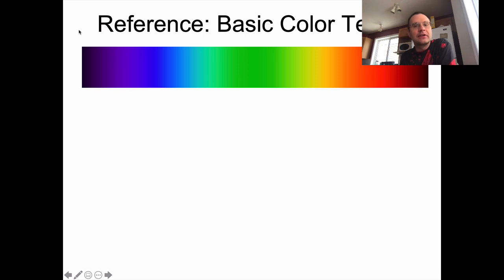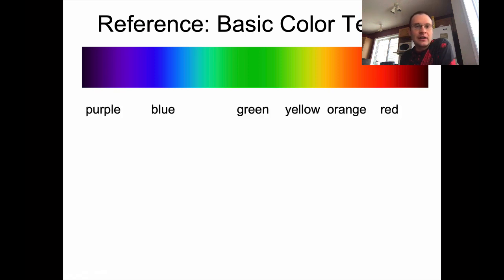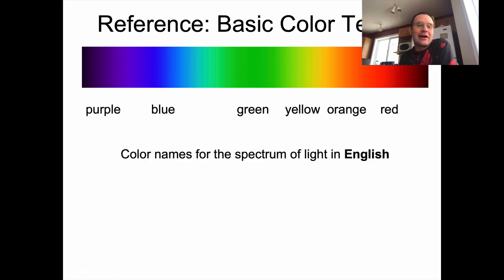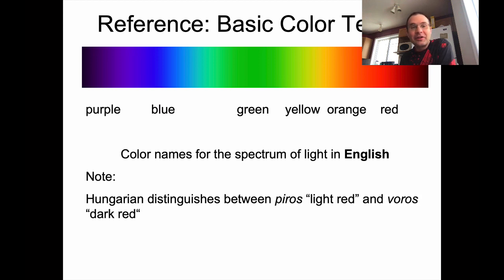There's also a linguistic way to divide up the color spectrum. In English, I would divide it: red, orange, yellow, green, blue, purple — six colors. But there are other languages that make further distinctions. Hungarian apparently distinguishes between piros and vörös — a light red and a dark red. Russian distinguishes between a dark blue, siniy, and a light blue, goluboy.